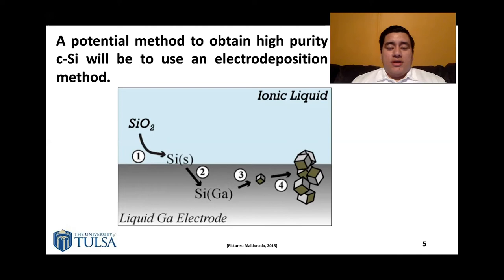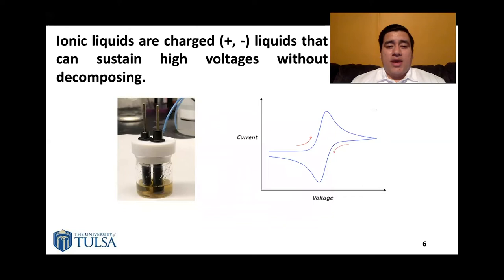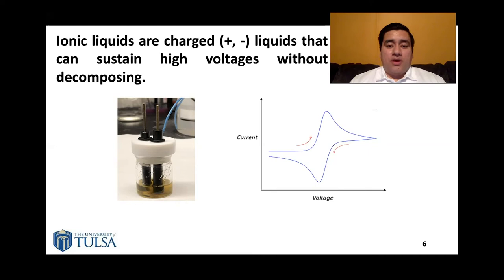The electrolyte solution that we will be planning to use is something called an ionic liquid. The ionic liquid is simply a charged liquid made out of positive and negative charges. This is very important because ionic liquids are one of the few liquids that can actually sustain sand for the electrodeposition to work. Also, they have a high voltage window, which means that we can apply high voltages and have a strong force to separate the Si components and oxygen gas.